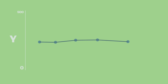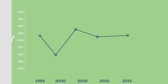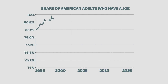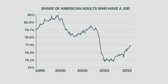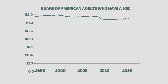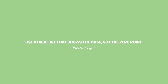Sometimes you need to fiddle with the y-axis to tell a story properly. Right now the share of American adults who have a job has fallen to a generation-long low — it's a really big deal. But if you chart this data with the y-axis at zero, you can't see the change at all. Narrowing the range to dramatize what we're talking about isn't lying with statistics; it's emphasizing what's relevant. As Edward Tufte puts it, you need to use a baseline that shows the data, not the zero point.